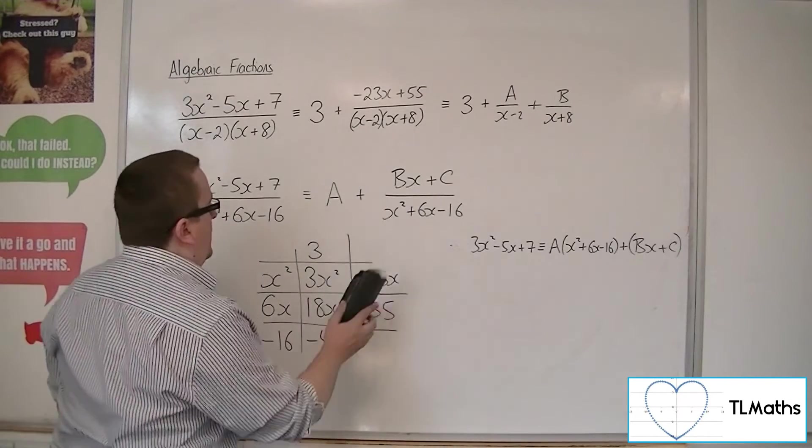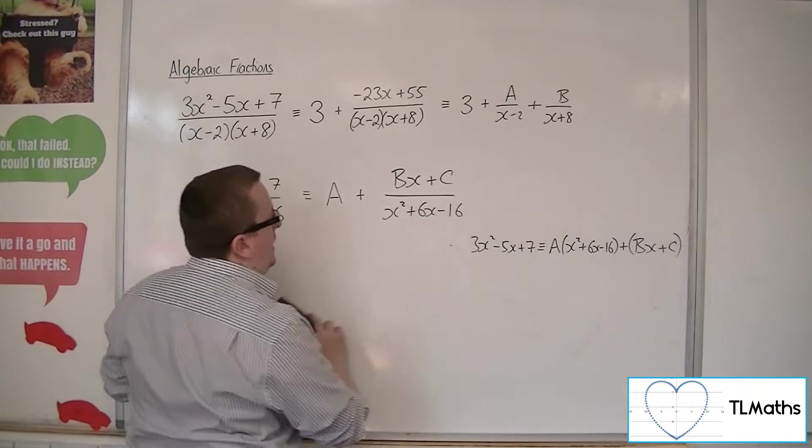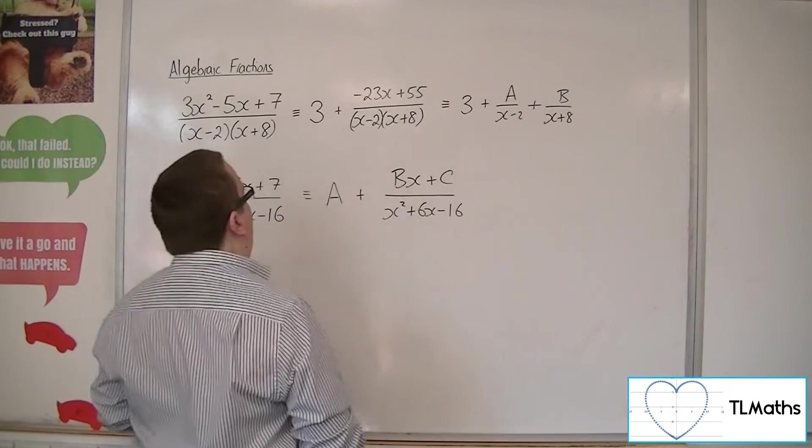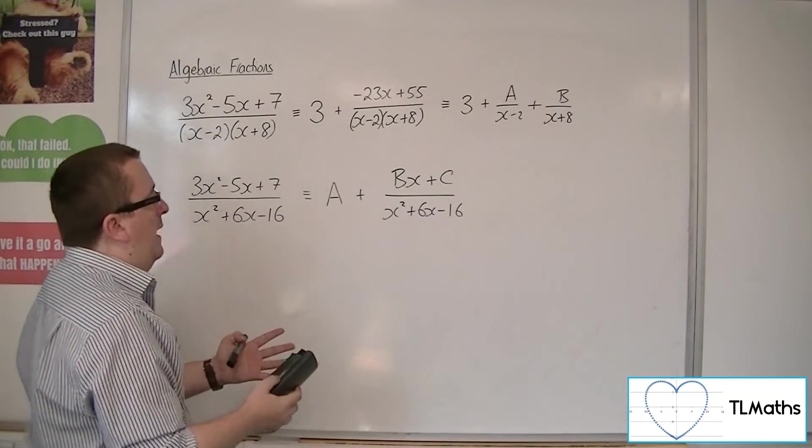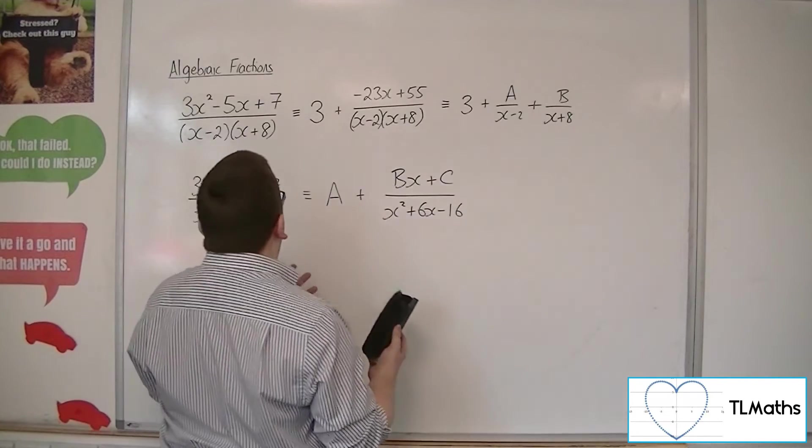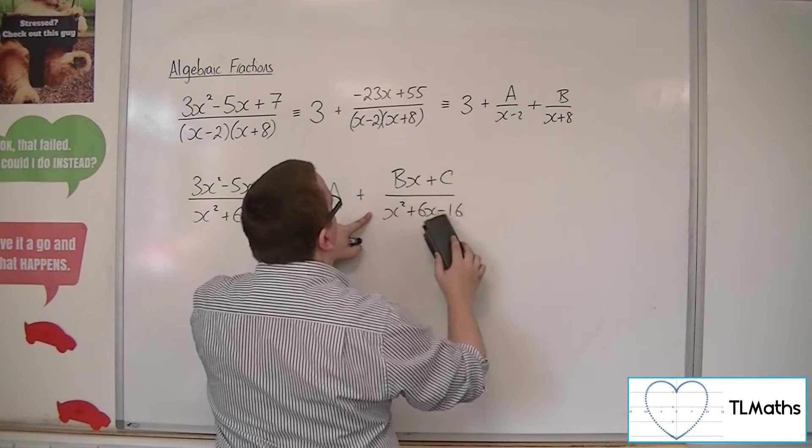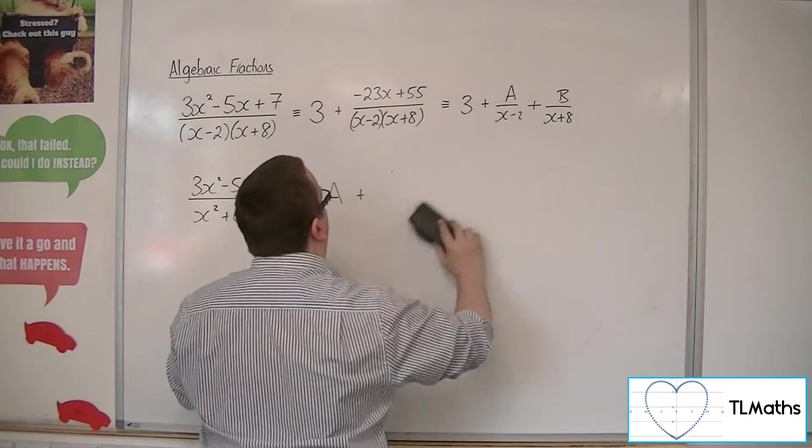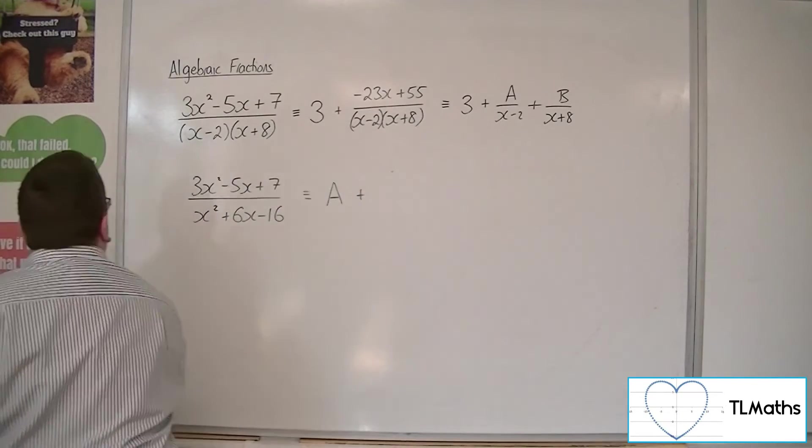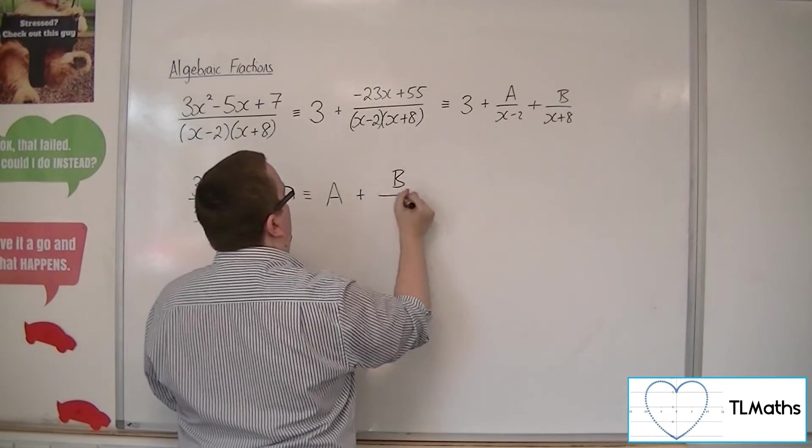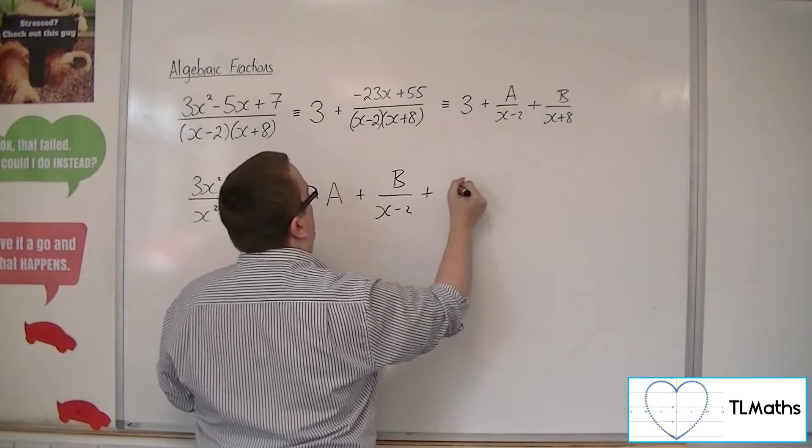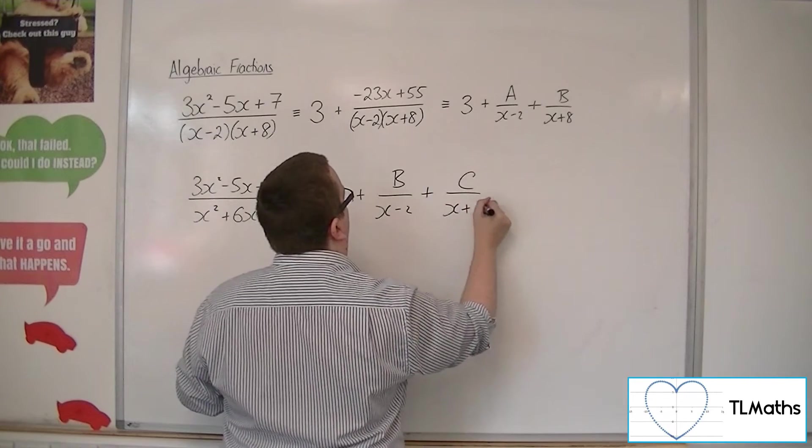So you could then think, well okay, so if I know it's going to be in this format, I could think, well, this bit I will be able to write as partial fractions. And so I could write that part as b over x minus 2 plus c over x plus 8.